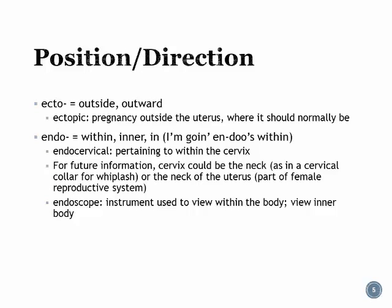Ecto means 'outside' or 'outward,' as in ectopic. An ectopic pregnancy is one that is outside the uterus, where it is supposed to be. Endo means 'within' or 'inner.'